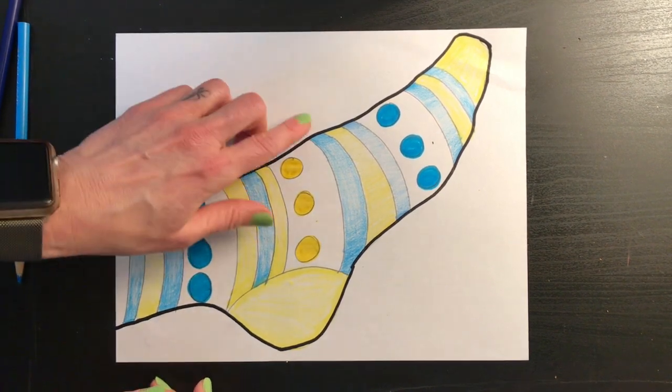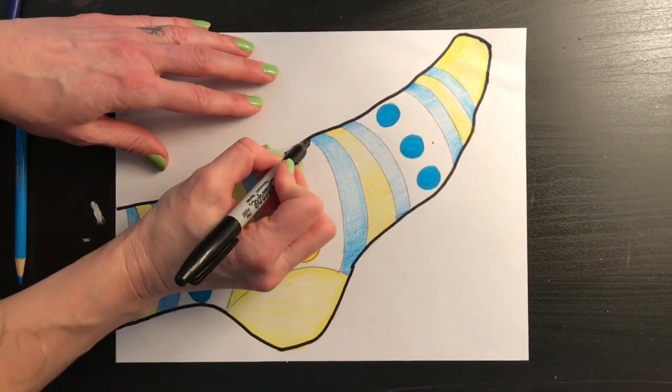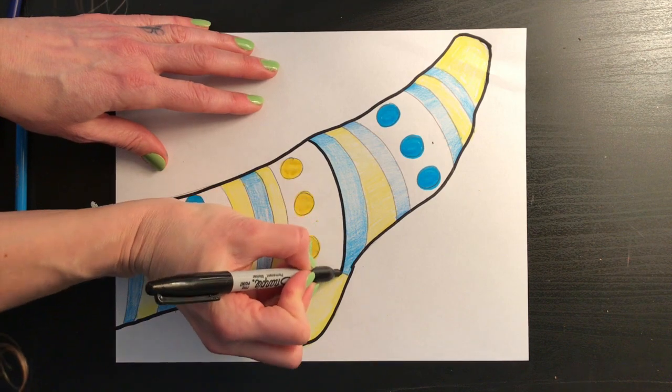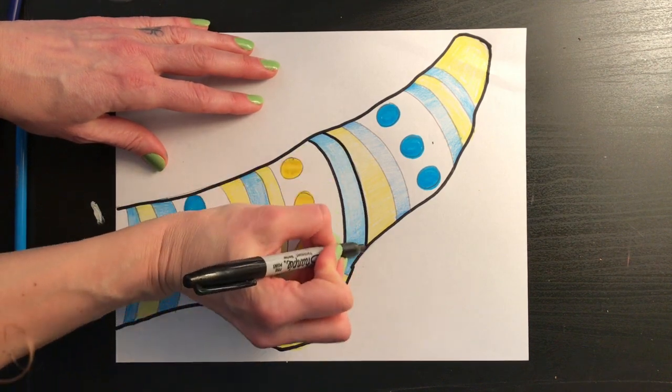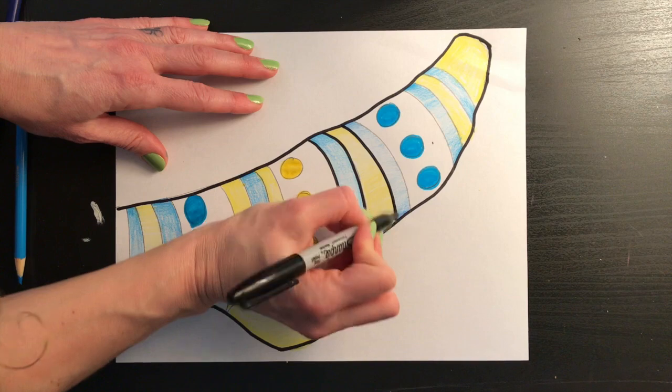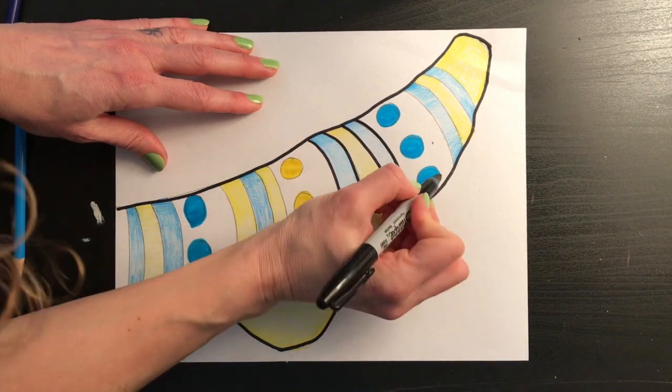I could even go a little further if I wanted to and trace all the lines that I had drawn as well. I think I'm going to go ahead and do that. I like the way that looks, even around my circles.